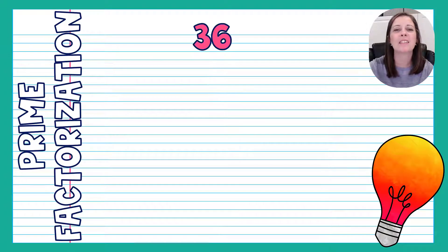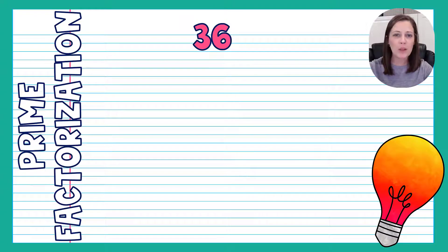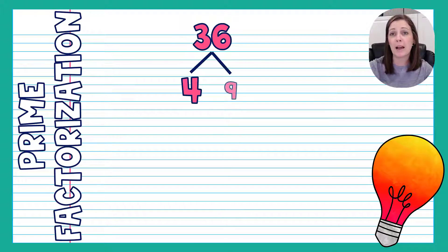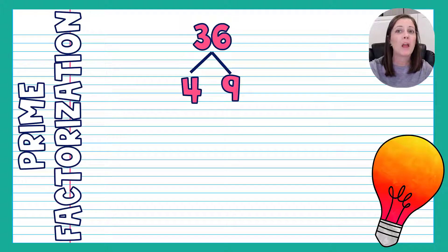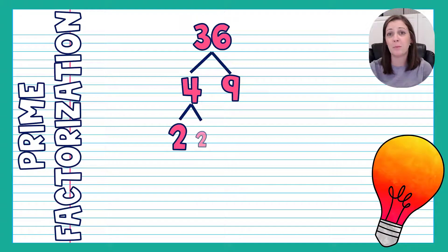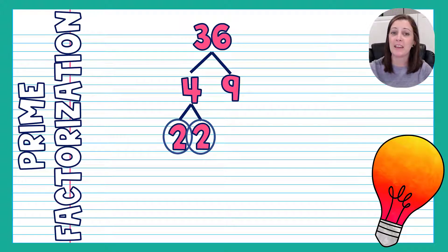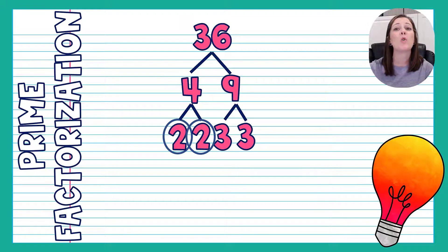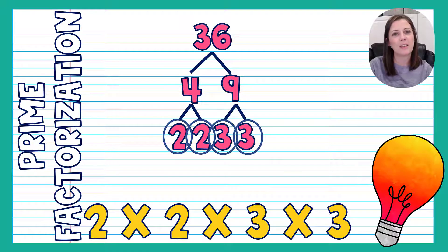One last example before you try this on your own: 36. A slightly bigger number that can be broken down a few different ways. I'm going to choose 4 times 9 since I've just worked with these numbers. Four breaks down into 2 times 2 — both prime, circle them. Nine breaks down into 3 times 3 — three is prime because the only way to get it is 1 times 3, so circle those. Everything is circled; writing it out: 2 times 2 times 3 times 3.